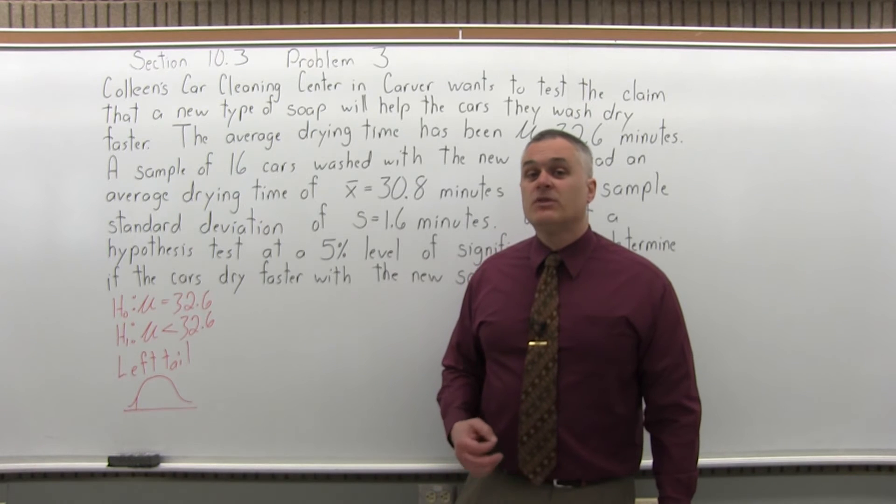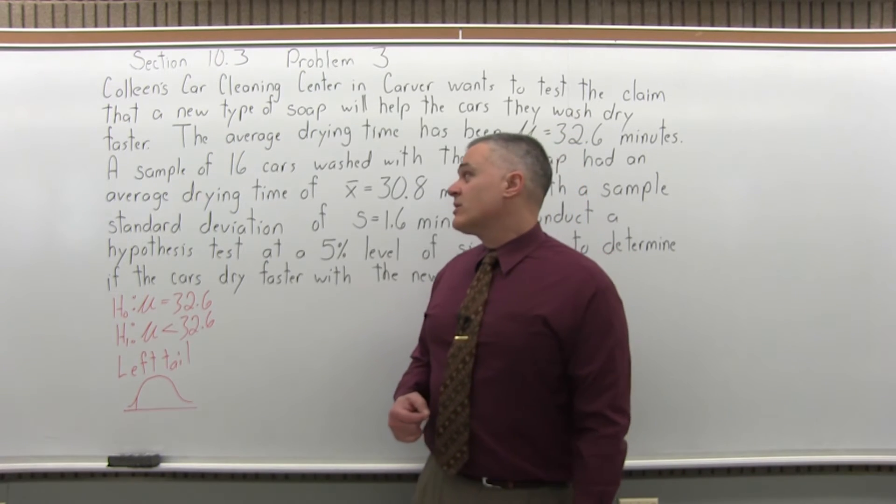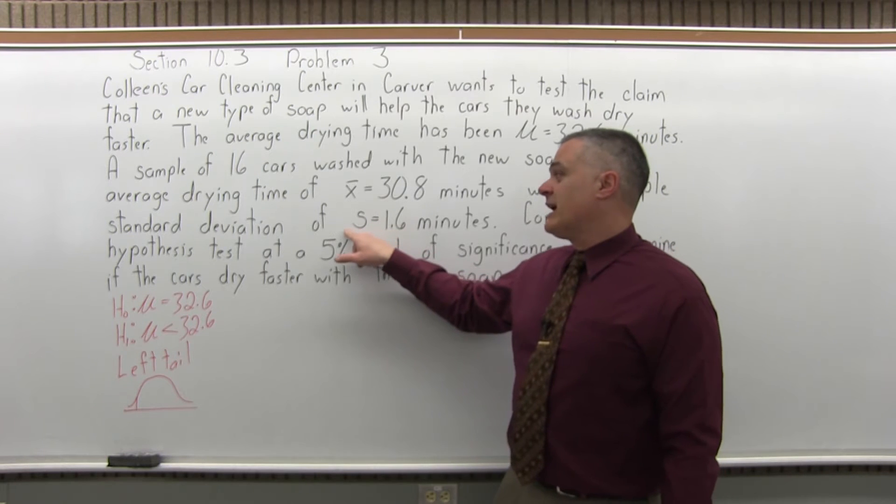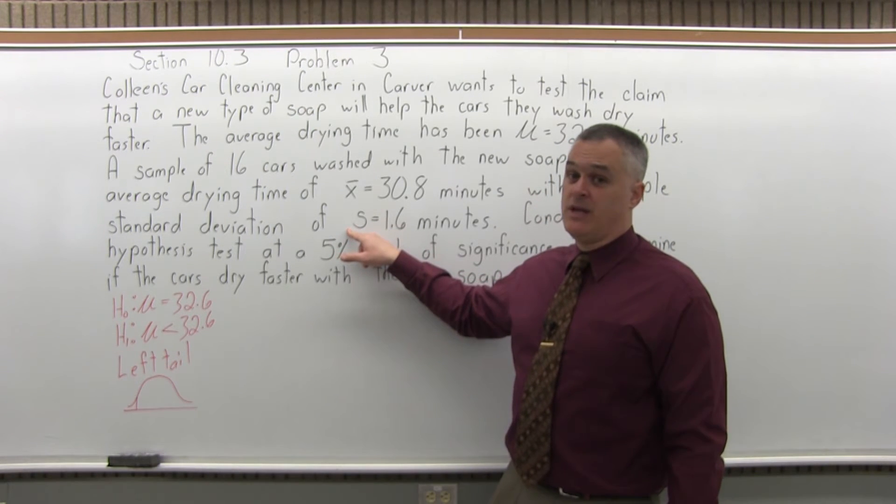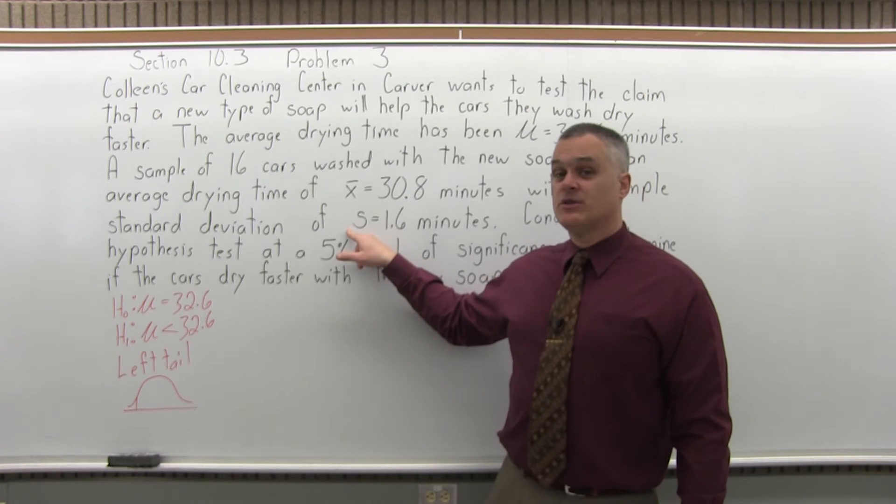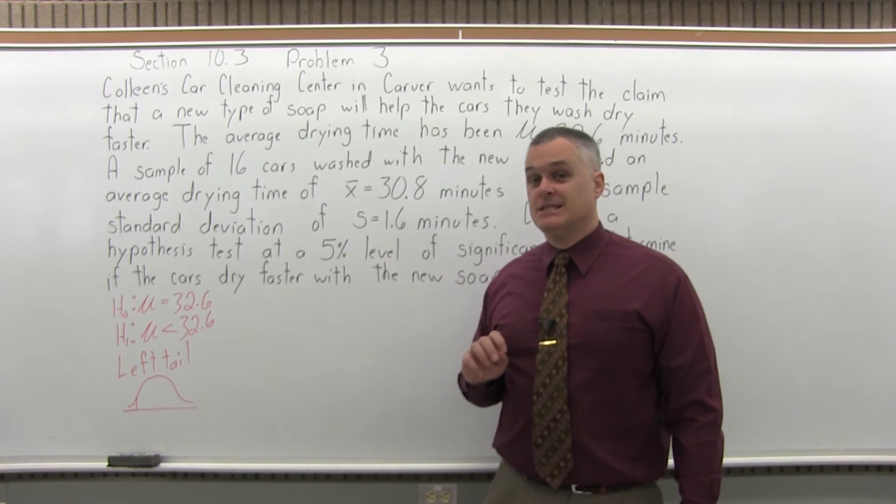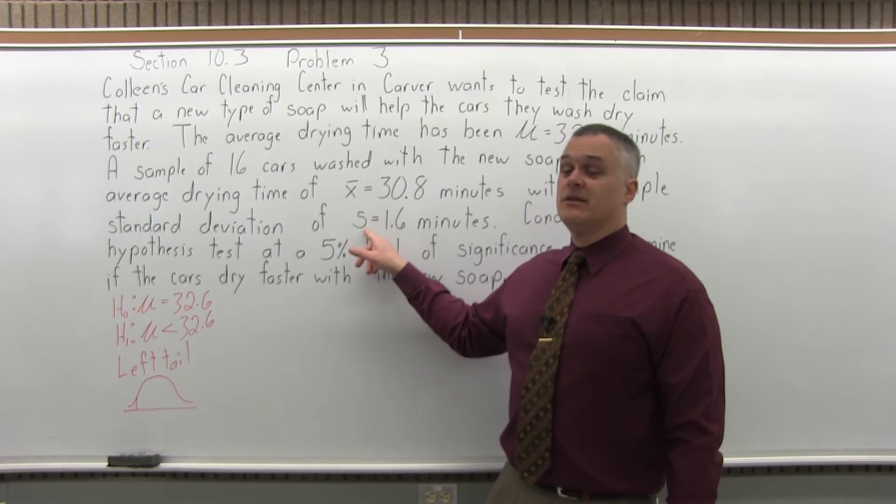So, that was the third step determining that it's left tail. The fourth step will be compute the value for t. Now we're going to compute t because we have to do our test based on the fact that we have the standard deviation of only the sample. If we happen to know the standard deviation of the entire population, then we would calculate z. But, since we don't, we calculate t.